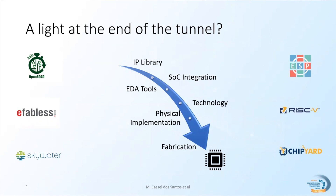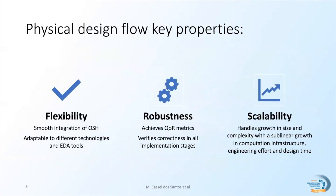Together with open source IP libraries and agile SoC integration methodology, it's necessary to develop agile methodologies for the physical design of these SoCs. Such agile methodologies must have three properties: flexibility for smooth integration of open source hardware and easy adaptability to different technologies and EDA tools; robustness to not only achieve quality-of-results metrics but also enable efficient verification of design correctness; and scalability to handle growth in size and complexity with sublinear growth in computation infrastructure, engineer effort, and design time.